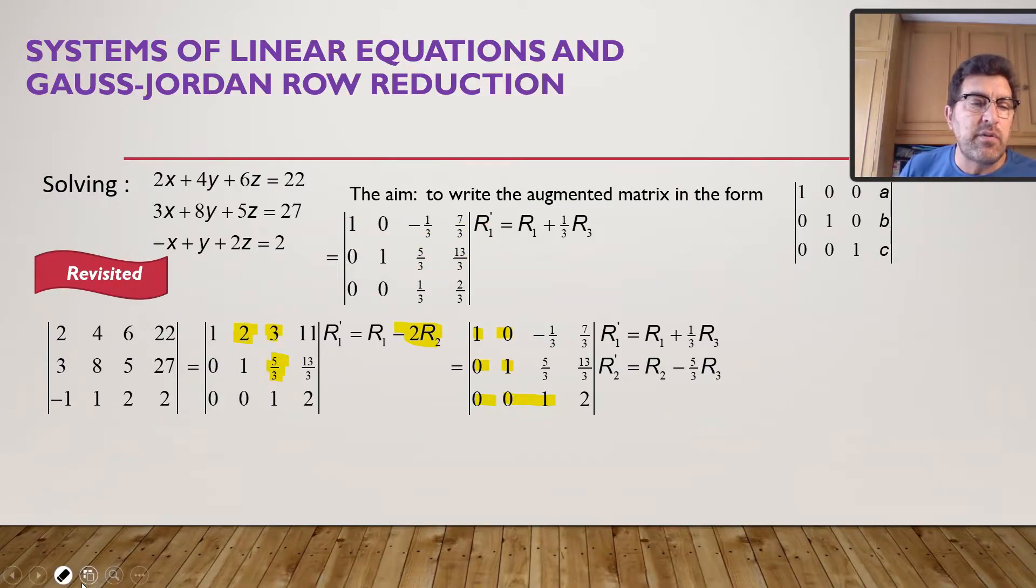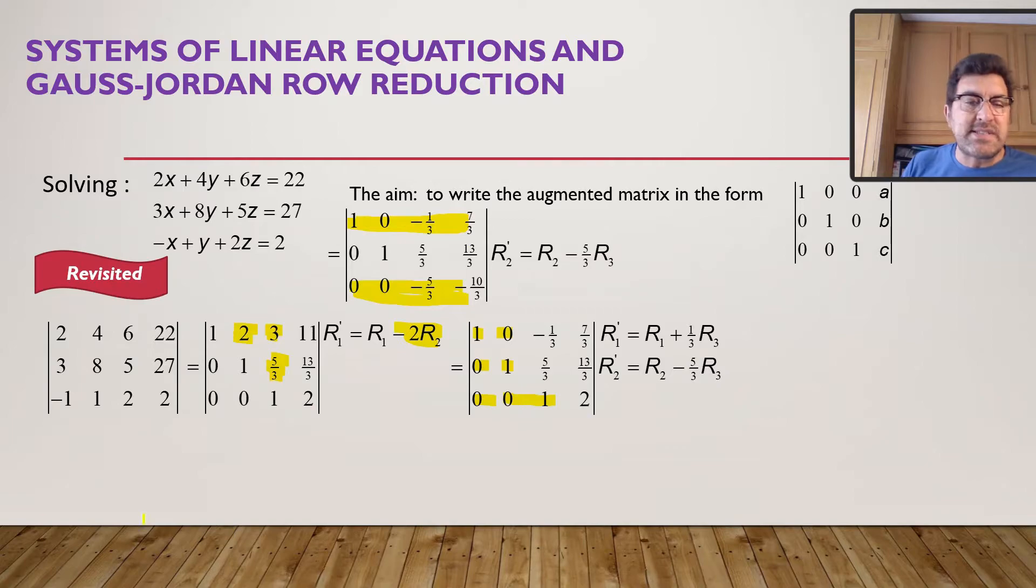I have, for the new row 1, there, I have the old row 1, which is there, plus a third of row 3, which I changed over there. Remember, it was 1 and 2. Now, if I add those 2 there, I get a 0 here. And if I add those 2, I get 9 over 3, which should result in a 3 over there.